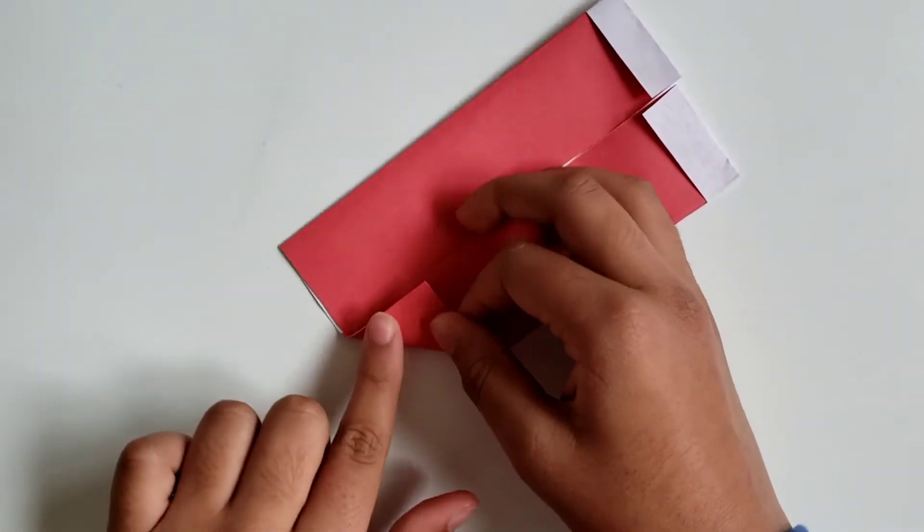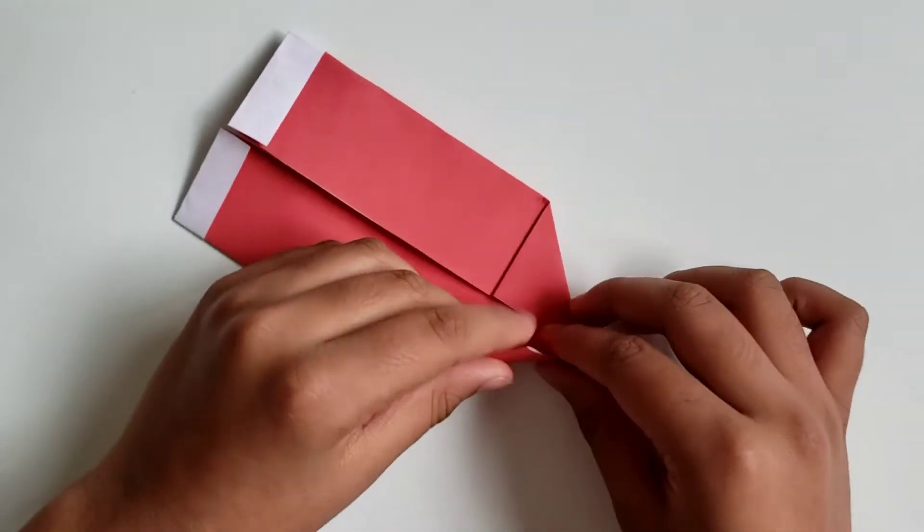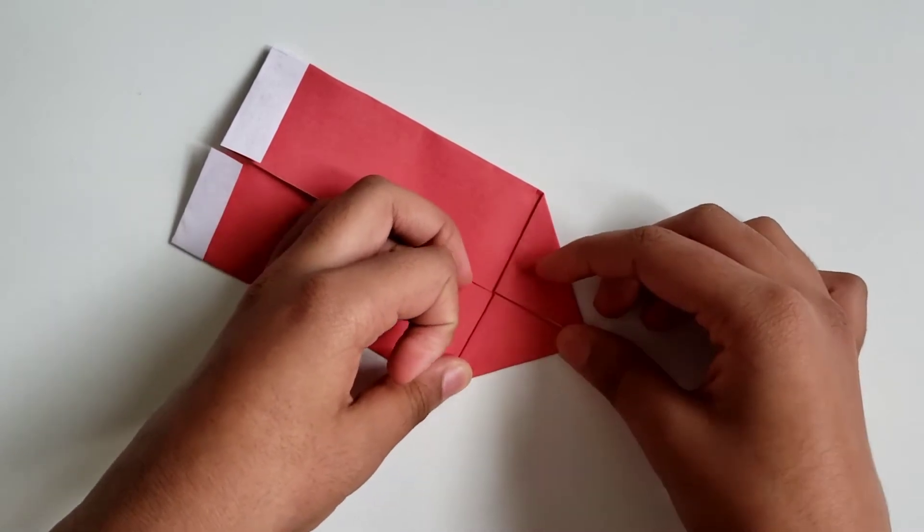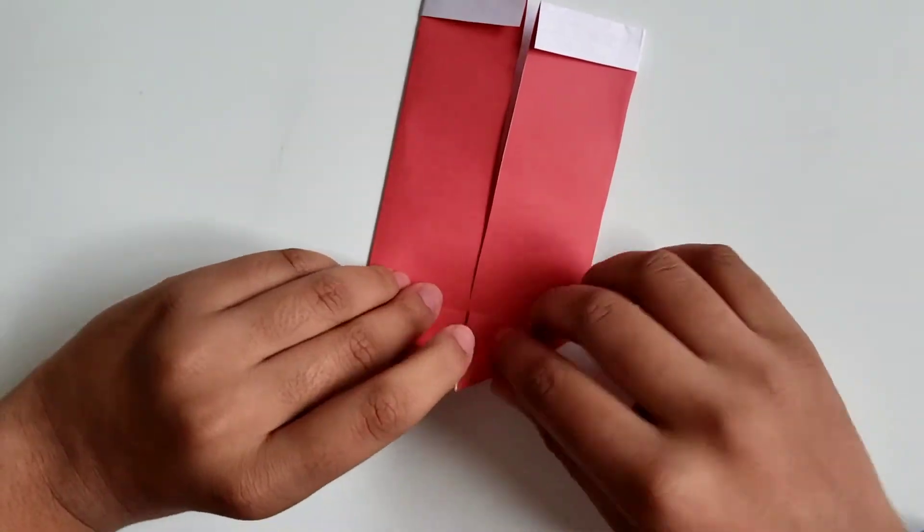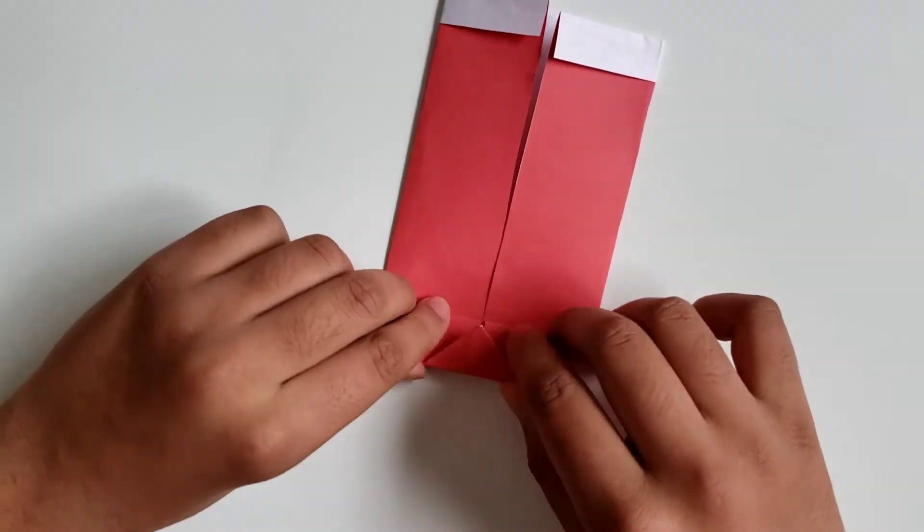Same thing for the other side. Once we've done that, we're going to take this and we're going to fold it in. Then we need to fold this like such, and then a bit more so you can create a crease.